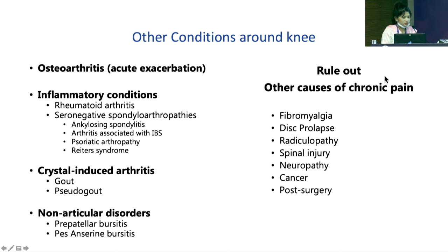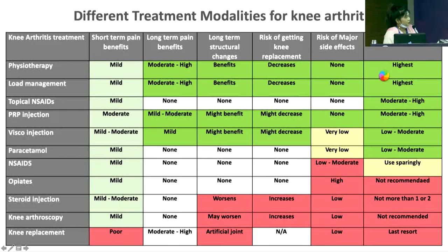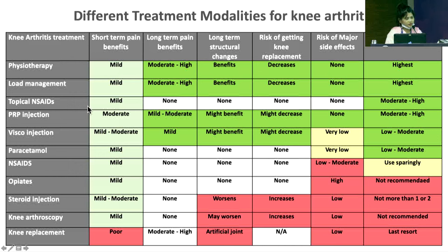Conditions around the knee also include pre-patellar and pesanserine bursitis. When treating these conditions, you have to rule out fibromyalgia, disc prolapse, radiculopathy, spinal injury, cancer, and post-surgery conditions. Treatment options for patients who come to the OPD with knee pain include oral medicines — paracetamol being the commonest unless a patient has liver issues — then NSAIDs, though they carry low-to-moderate risk of side effects. Topical NSAIDs, physiotherapy, and load management are also used. This topic relates to knee injections.